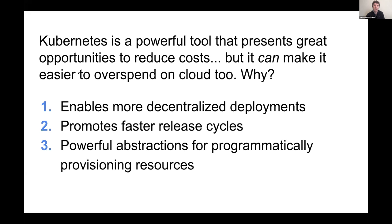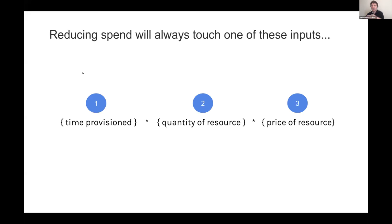Now that we have the overall problem framed, let's present a high-level framework for making optimizations. Anytime we make an optimization, we're going to be touching at least one of these variables: the amount of time a resource is provisioned, the quantity of that resource, or the price of that resource.